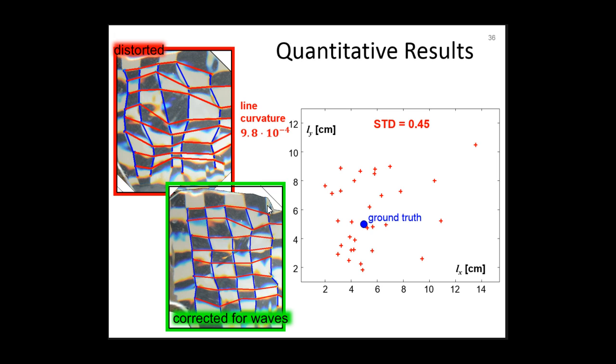Here are all the distorted points. We computed the spread of these points and the curvature of grid lines. Here is our result of the corrected checkerboard. The checkerboard is much more uniform. Similarly, we overlay the points of the corrected grid in this scatterplot. You can see that the corrected pattern is closer to the real size as it has lower standard deviation and curvature. So correction for the waves by our method significantly lowers the spread and curvature.